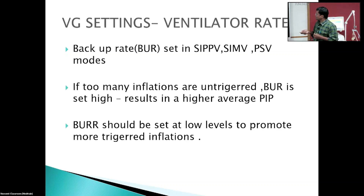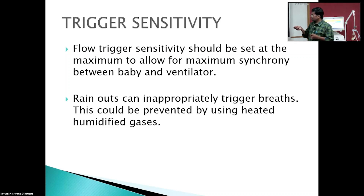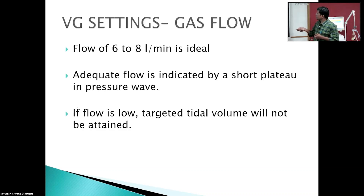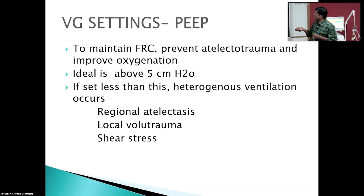Regarding backup rate: if there are too many non-triggered inflations, a higher backup rate leads to a higher average PIP. A lower backup rate promotes more triggered ventilations and easier weaning. Trigger sensitivity should be set at maximum to allow maximum synchronization; however, rales or condensation can inappropriately trigger breaths — this can be avoided by using heated humidified circuits. Gas flow of 6 to 8 L/min is ideal; inadequate flow will cause a low tidal volume alarm.